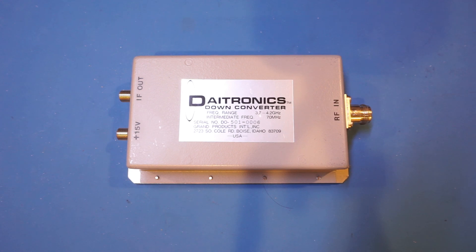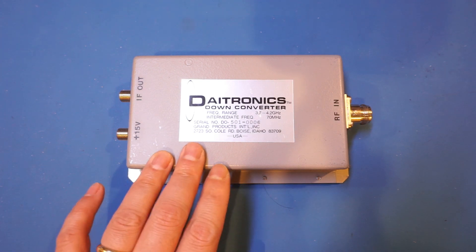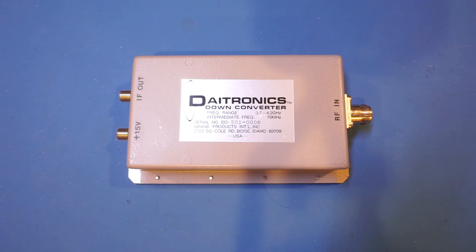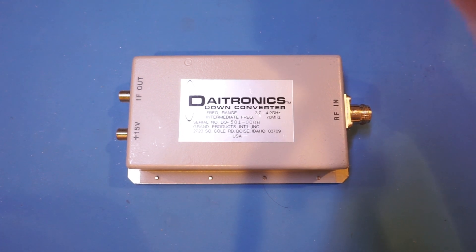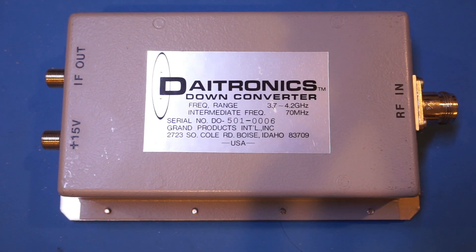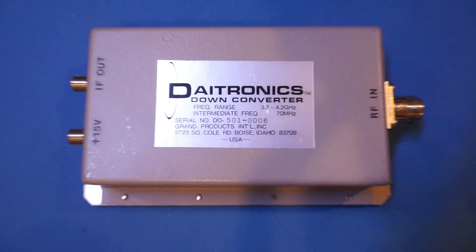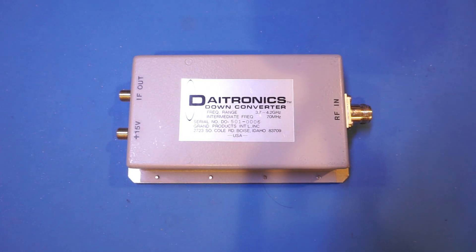This downconverter is really just an active mixer. Being an active mixer, there will be some conversion gain instead of conversion loss. And because it only has an input and output port besides the power port here, clearly the LO is built in. As you can see from the label, it has an input frequency between 3.7 to 4.2 GHz with an IF of 70 MHz. Judging from the frequency range, it was probably intended for using in C-band applications, possibly for satellite communication receivers.